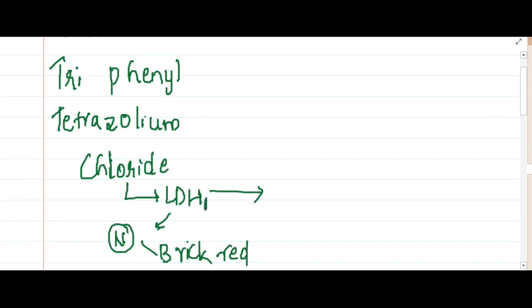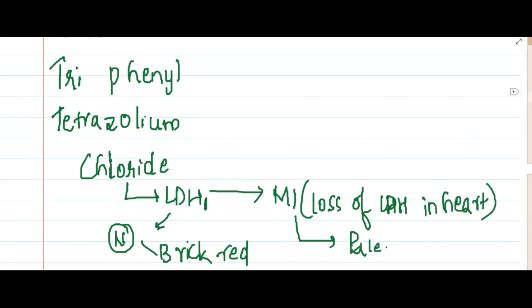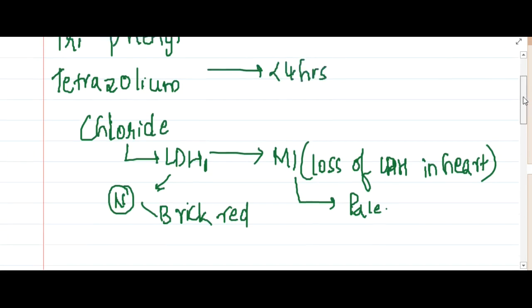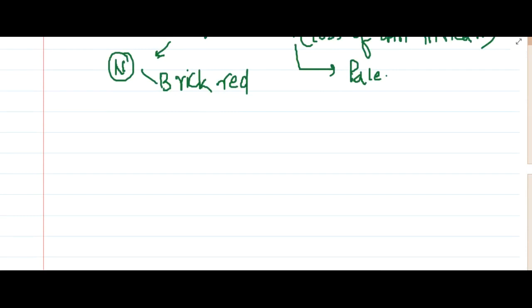In the myocardial infarction areas, loss of LDH1 occurs in the heart, and as a result, these areas will stain pale because LDH1 is absent. This staining is seen if the injury is less than four hours. This looks somewhat like this—it's not an exact picture.